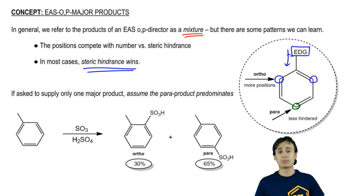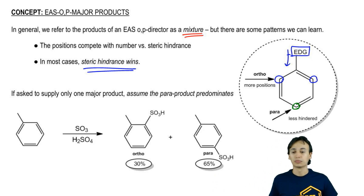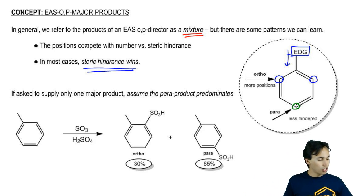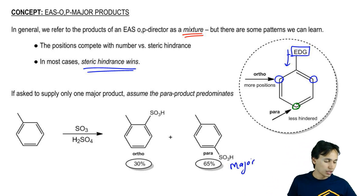If in a question you're asked to supply one major product instead of a mixture, if it says specifically which one's the major product, here we can see a sulfonation on toluene. You can see we've got our SO3, we've got our fuming H2SO4 and look what we're going to get.